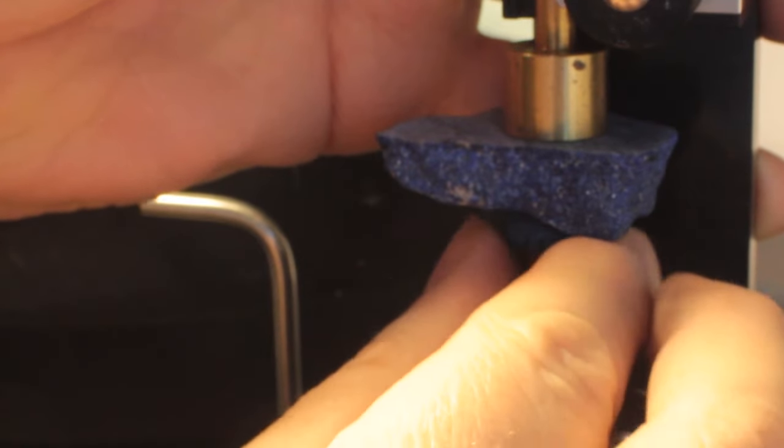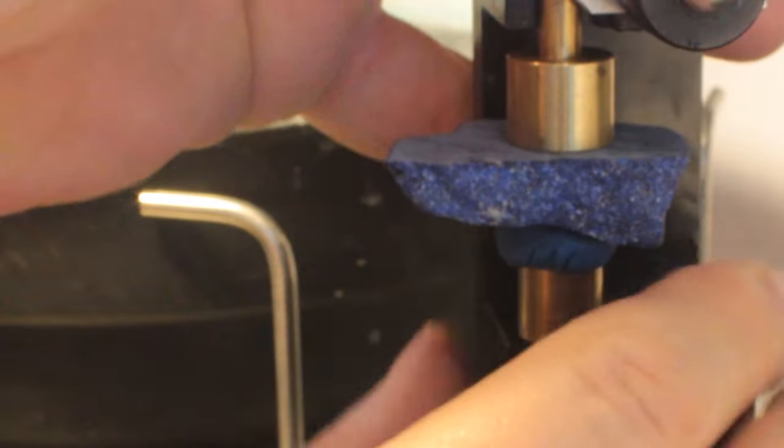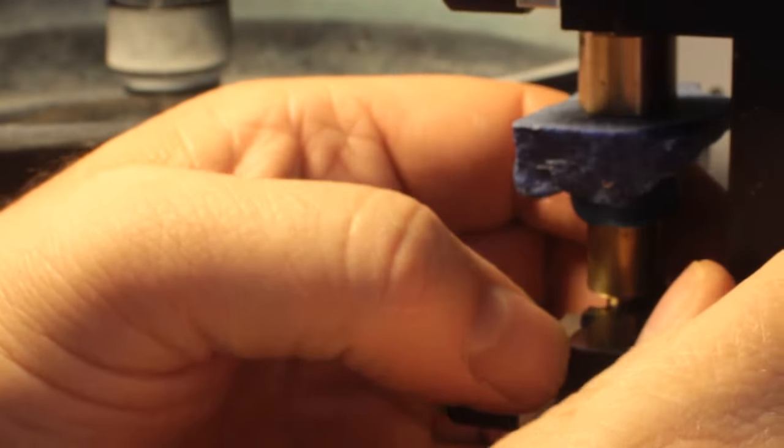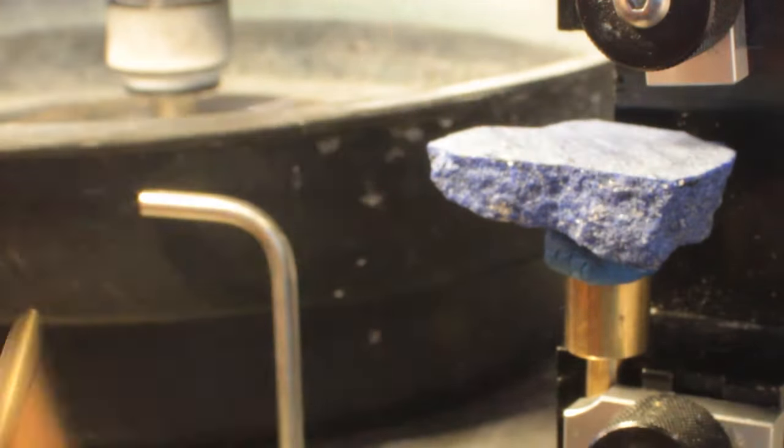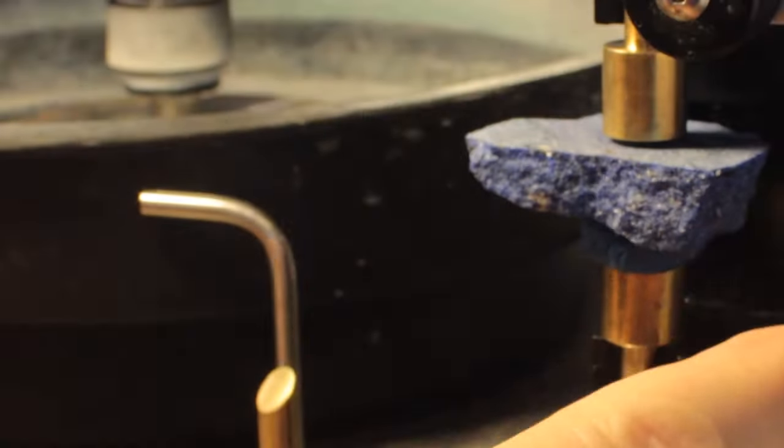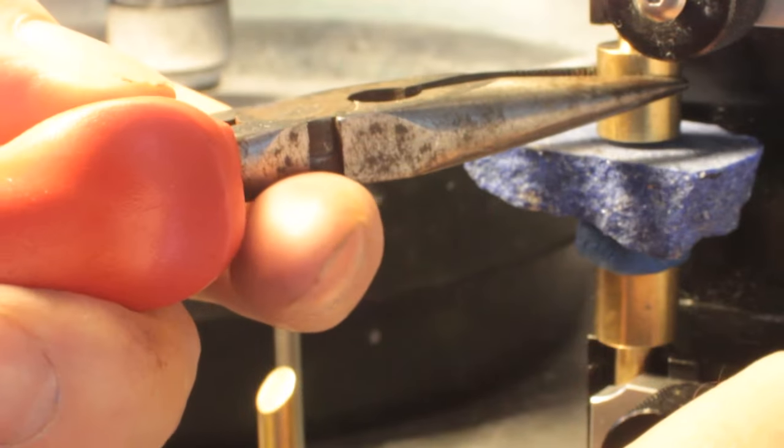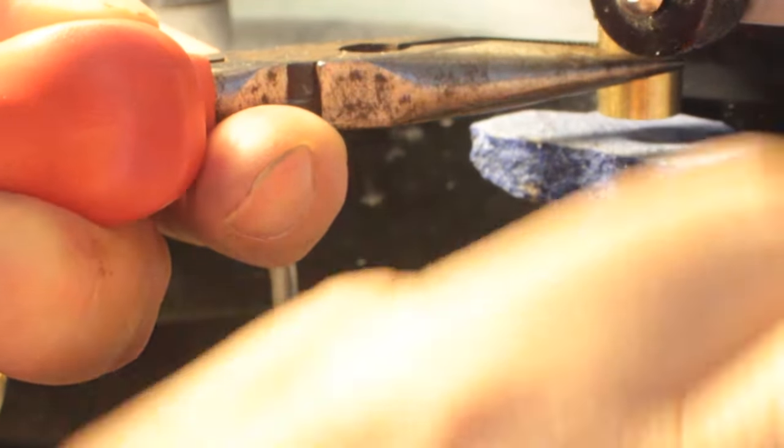That is pretty much where I want the stone to be. So I push down on the transfer jig to help set the bottom part of the stone into the modeling clay. Then I remove this dop, slide in the dop that we're going to use, and now we're ready to glue the dop to the stone.